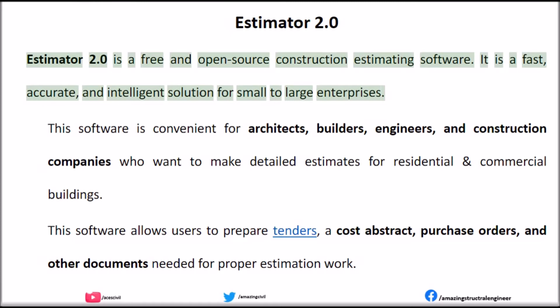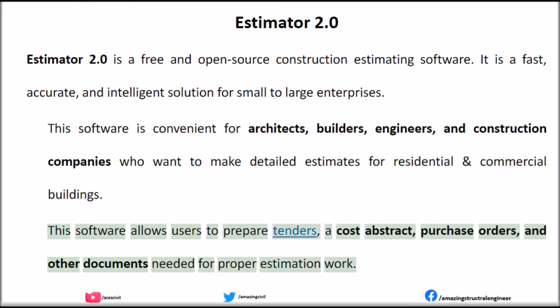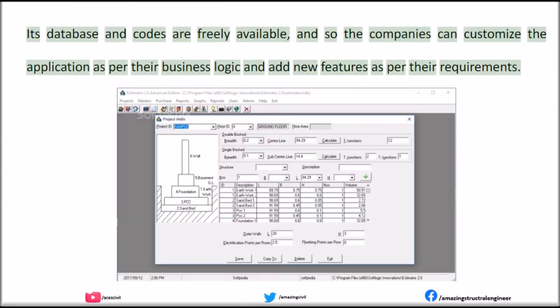Estimator 2.0 is a free and open source construction estimating software. It is a fast, accurate, and intelligent solution for small to large enterprises. This software is convenient for architects, builders, engineers, and construction companies who want to make detailed estimates for residential and commercial buildings. This software allows users to prepare tenders, a cost abstract, purchase orders, and other documents needed for proper estimation work. Its database and codes are freely available, so companies can customize the application as per their business logic and add new features as per their requirements.